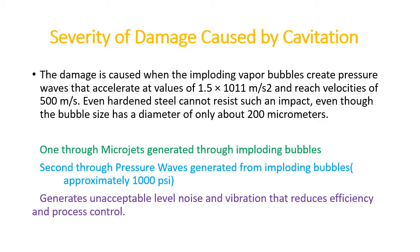What is the severity of the damage? The damage is caused when the imploding vapor bubbles create pressure waves that accelerate at a value of 1.5 × 10¹¹ meters per centimeter square per second squared and reach a velocity of 500 meters per second. Even hardened steel cannot resist such an impact, even though the bubble diameter is only about 200 micrometers.